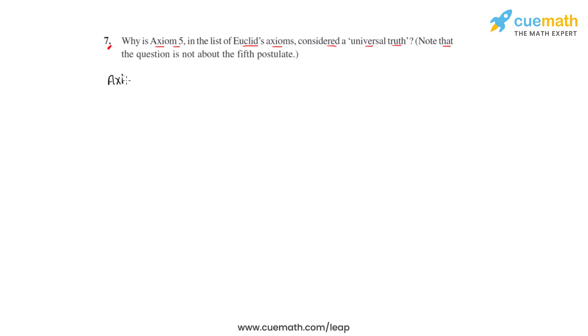Axiom 5 says that a whole is always greater than the part. This is considered as a universal truth because it holds true in any field of mathematics and in other disciplines of science as well.